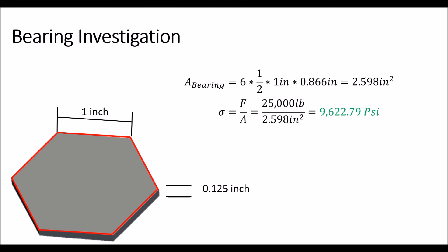Then we do the same as we did before, and we find the stress acting on that area by taking the force divided by the area. So 25,000 divided by 2.598 inches squared, and we find that the bearing stress on this area is 9,622.79 psi.